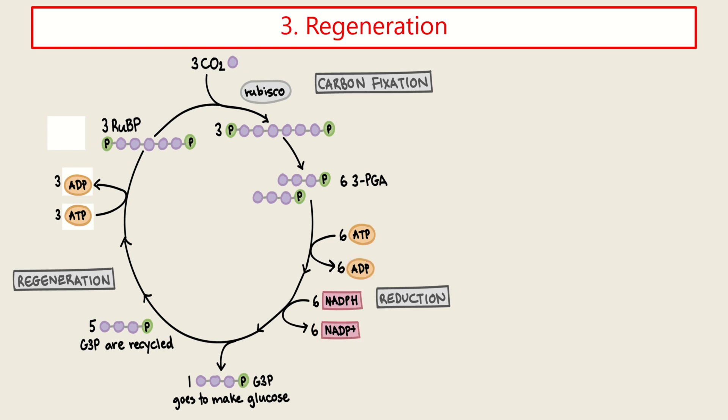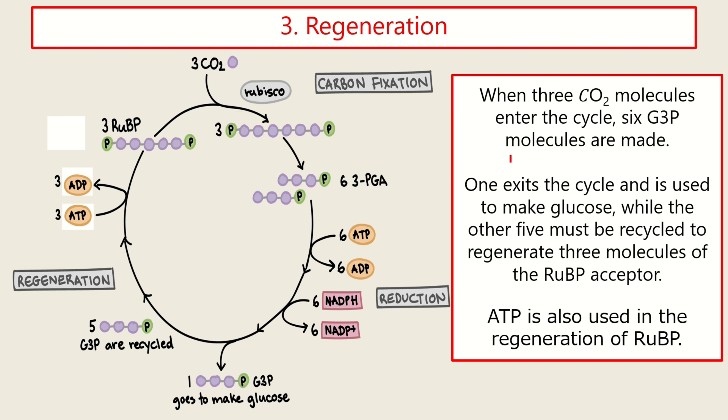Last stage is the regeneration. Three carbon dioxide molecules can produce six G3P molecules. So in the process, the three carbon dioxide molecules, there will be six G3P molecules can be made.